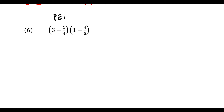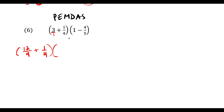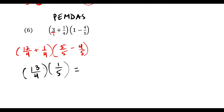For question 6, use order of operations — simplify inside the parentheses first. To add 3 plus 1/4, write 3 as 12/4, plus 1/4. Then 1 equals 5/5, so the denominator matches the term we're subtracting. Adding gives 13/4. Then 5 minus 4 is 1, so we have 1/5. Now multiply the two fractions: 13 times 1 is 13, over 4 times 5 is 20. The answer is 13/20.